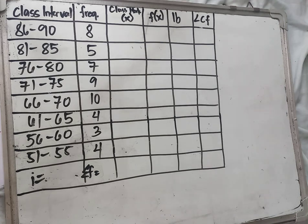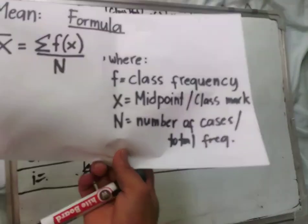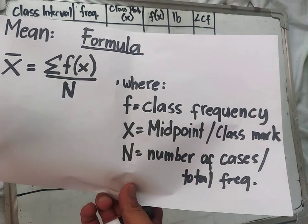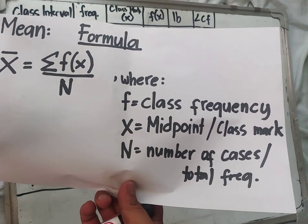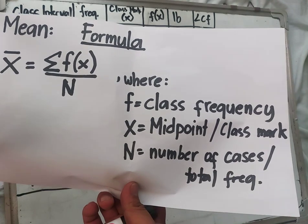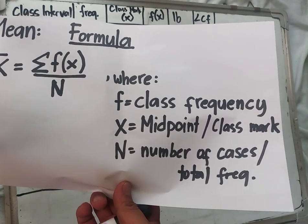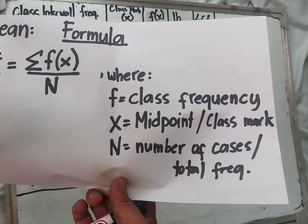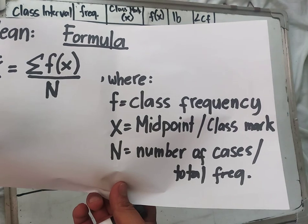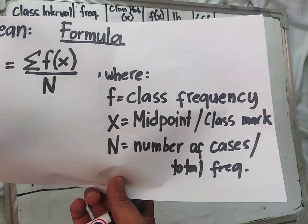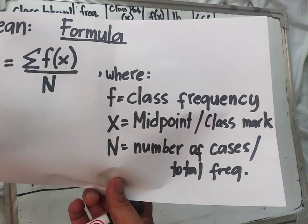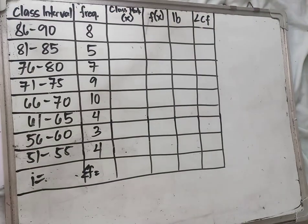So what is the formula for finding the mean of grouped data? The mean formula is: x-bar equals summation of f times x over n, where f is the class frequency, x is the midpoint or class mark, and n is the number of cases or the total frequency.